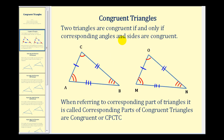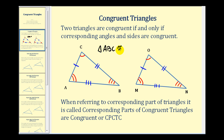Two triangles are congruent if and only if corresponding angles and corresponding sides are congruent, as we see marked here. These two triangles are congruent because corresponding sides and angles are congruent. When we identify congruent triangles, it is important to know where the corresponding angles and sides are. In this case, triangle ABC is congruent to triangle MNO.